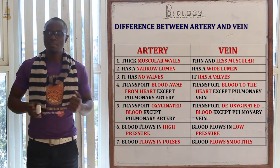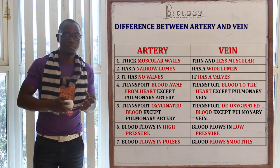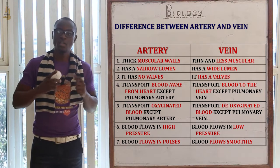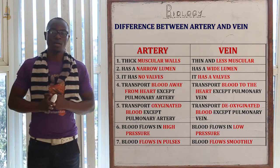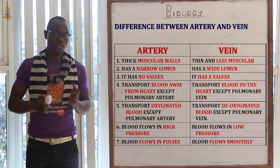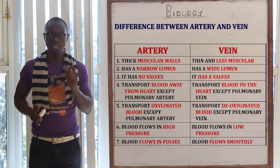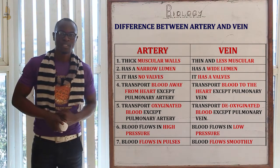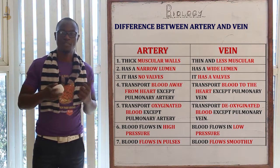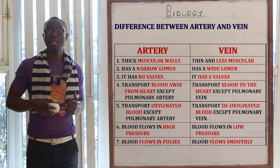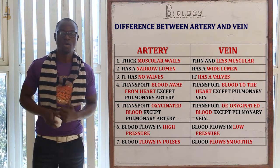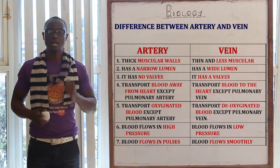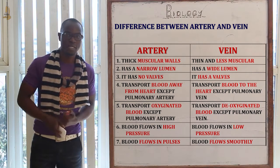Arteries mainly transport oxygenated blood, except the pulmonary artery which is the only artery that transports deoxygenated blood. Veins carry deoxygenated blood, except the pulmonary vein which is the only vein that carries oxygenated blood. Blood flows in arteries at very high pressure, while in veins it flows at very low pressure. Also, blood flows in arteries in pulses as the heart beats, while in veins blood flows very smoothly.